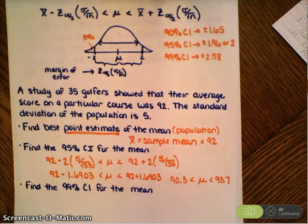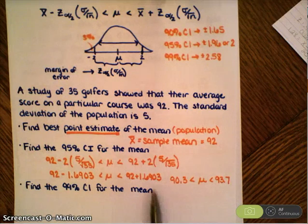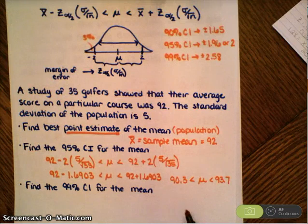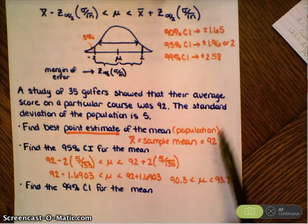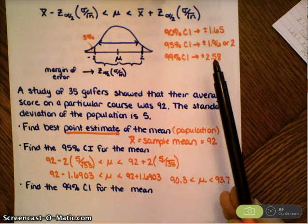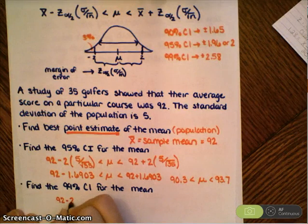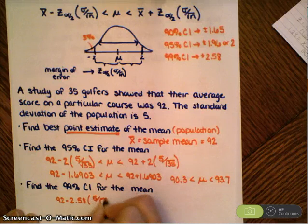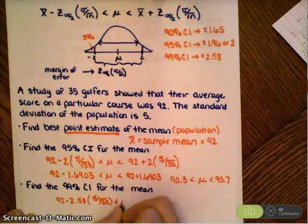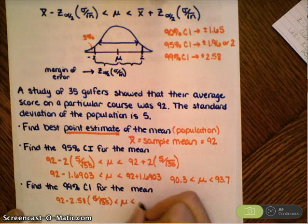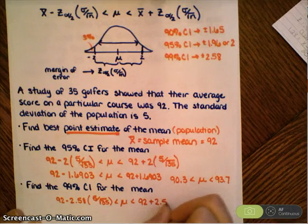What's going to happen here is if I want to be 99% confident, my range is going to be even wider. Hence, I'm multiplying now by a z-score of 2.58. I would have 92 minus 2.58 times 5 divided by the square root of 35, and then the same on the right-hand side, but add 2.58.